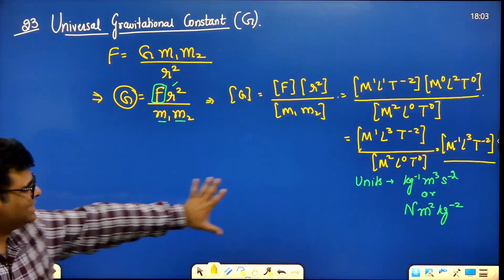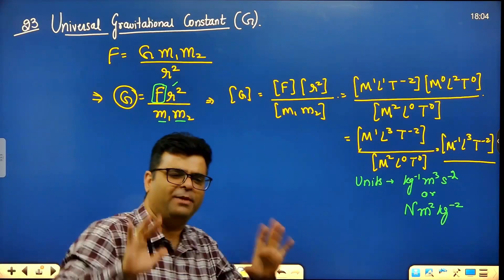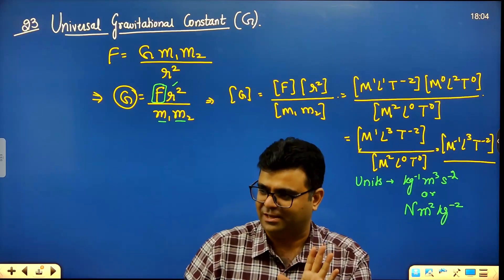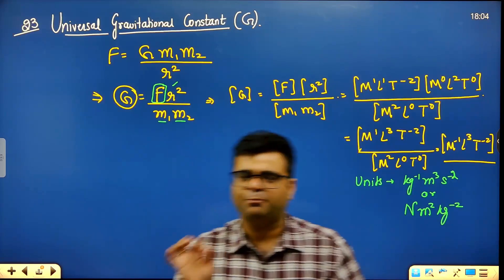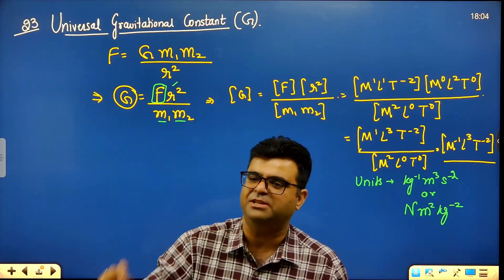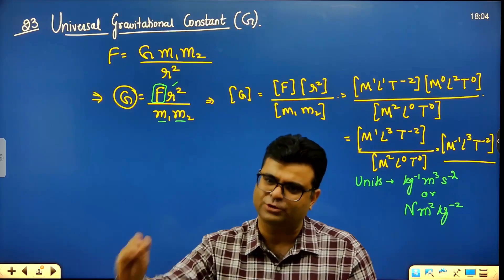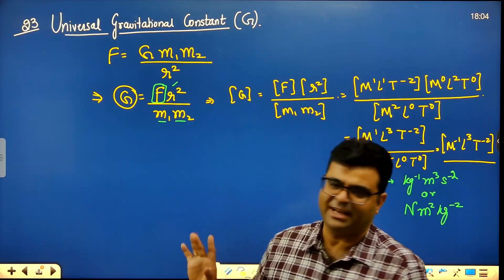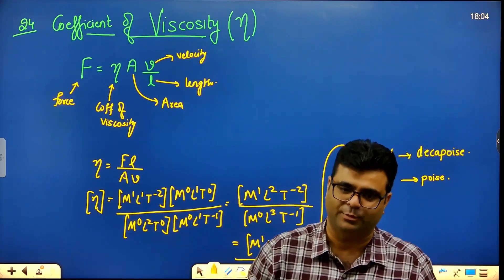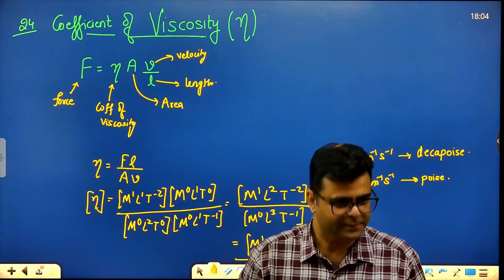The point is: if you remember the formula, you can find the dimensions. Your target should be to memorize as many dimensions as possible. For capital G, the formula was familiar; for any formula given, you can extract dimensions. Now let's write this down.